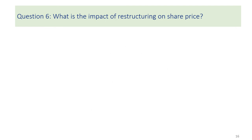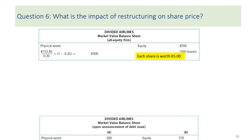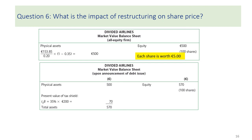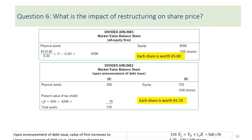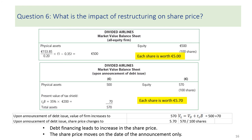Question 6: What is the impact of restructuring on share price? Originally, the share price of the unlevered firm is the value of equity — 500 — divided by the number of shares outstanding, 100 shares, giving a share price of €5. Upon announcement of the debt issue, the value of the levered firm increases to 570. Share price becomes 570 divided by 100 shares, which is €5.70 per share. The announcement of debt financing leads to an increase in share price, which moves immediately on the date of announcement.